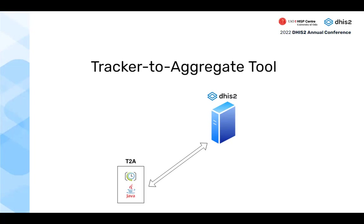Claude, the software engineer who contributed to the tracker-to-aggregate (T2A) tool, takes over. The T2A tool is a Java batch job application that pulls program indicator exports from DHIS2 and pushes them back as data value sets to the same instance. Java must be installed on the machine where the application will run. It runs as a scheduled batch job, with configurable timing.